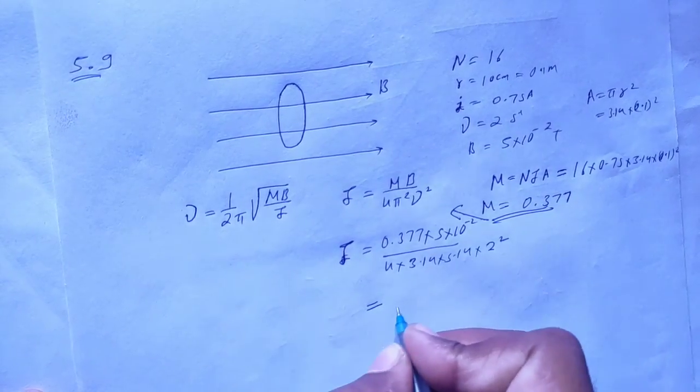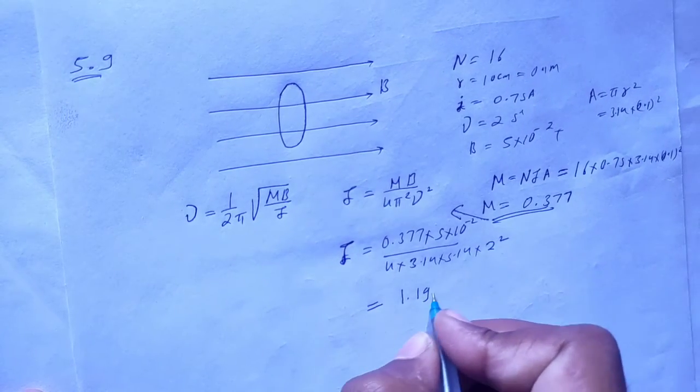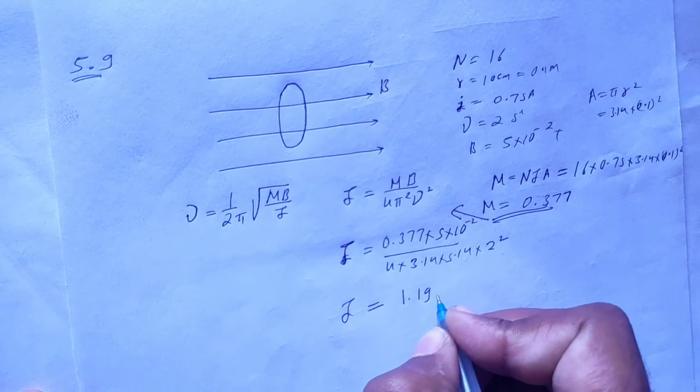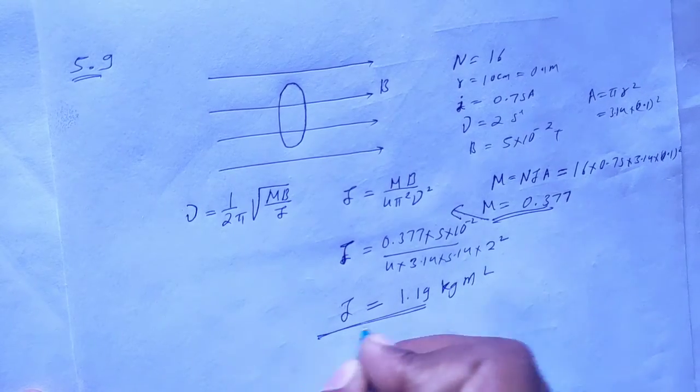So we will solve it. Then we will have 1.19 kg meter square. This is the moment of inertia.